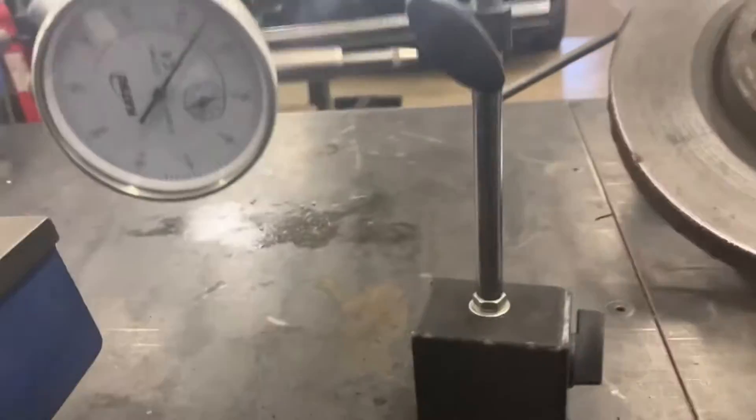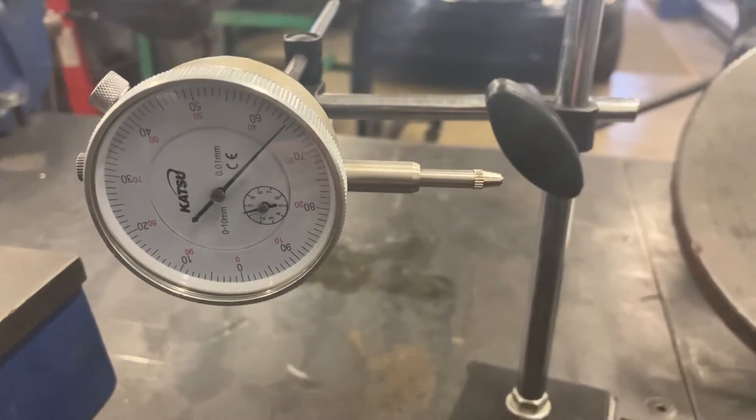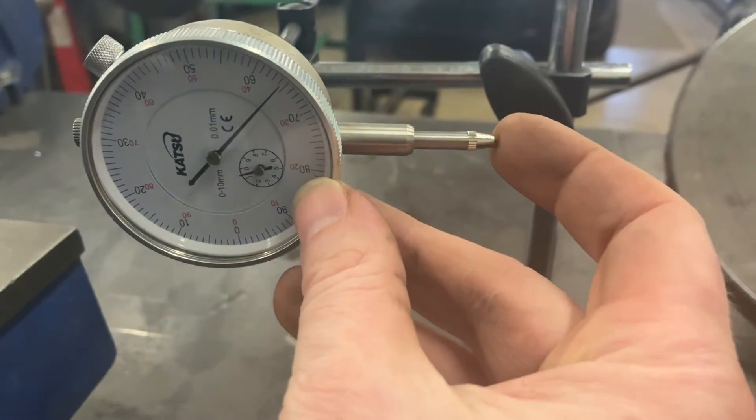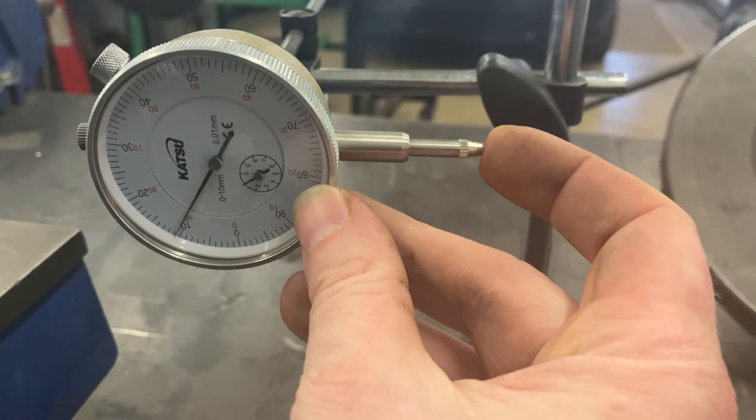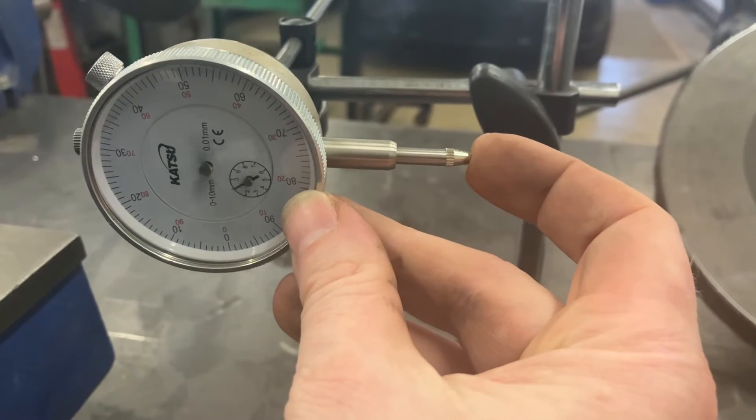Now the main bit is obviously the dial indicator itself. We've got a spring-loaded contact point here which will rest against various motor vehicle components and it will find or pick up movement in certain parts or warping.